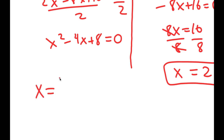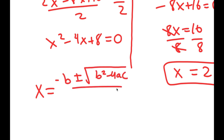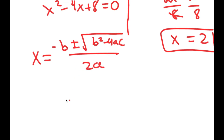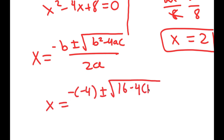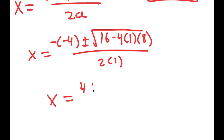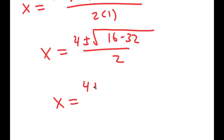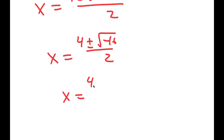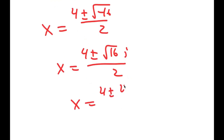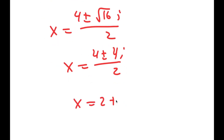Now for my left-hand side, I'm going to use the quadratic formula: negative b plus or minus the square root of b squared minus 4ac, all over 2a. So I get x equals negative negative 4, plus or minus the square root of 16 minus 4 times 1 times 8, all over 2. This simplifies to 4 plus or minus the square root of negative 16, over 2, which equals 4 plus or minus 4i, over 2, giving x equals 2 plus or minus 2i.